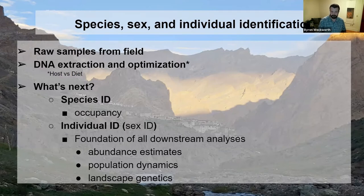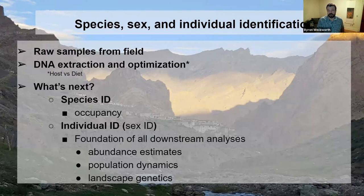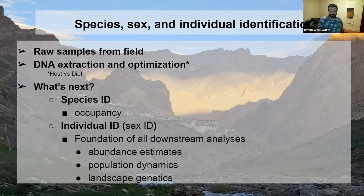Once you have your individual IDs, there's a whole host of things you can do. One of the most important is getting estimates of abundance — counting the number of cats, understanding population sizes — but also getting into population dynamics including connectivity and demographic parameters, and then things like landscape genetics: how the landscape is impacting those population dynamics.